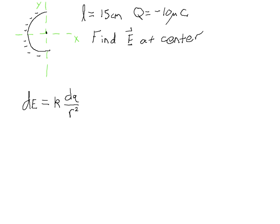This is an example problem similar to problem 45 in chapter 23 of the Serway text. In this problem we have a uniformly charged semicircular ring of length 15 centimeters and total charge of minus 10 microcoulombs. It's facing with its open end toward the positive x-axis and we're asked to find both the magnitude and the direction of the electric field at the center of the semicircle.